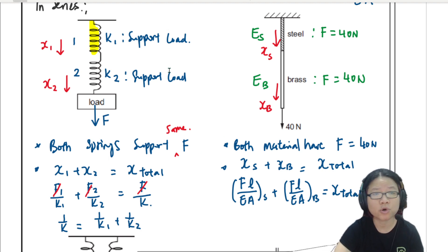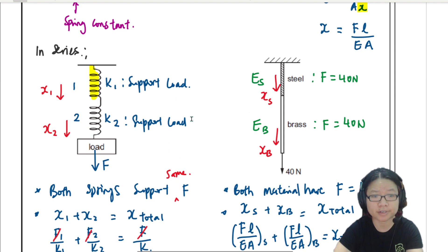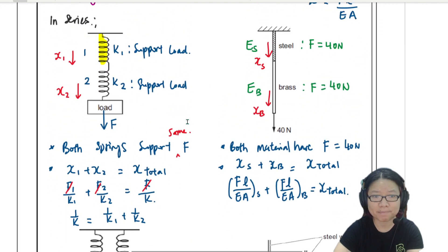So this is what you do when your rods are in series versus parallel. So the whole idea is they will both support the force. Because it's one after the other, they both experience the same force. And the extension of the first spring and the second spring, or the first rod and the second rod, is your total extension.